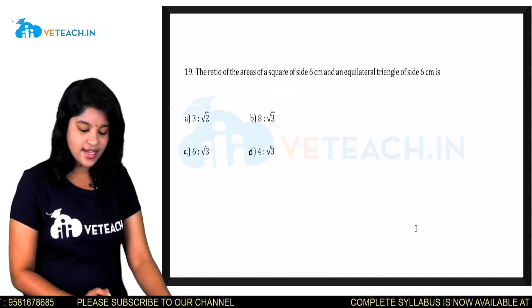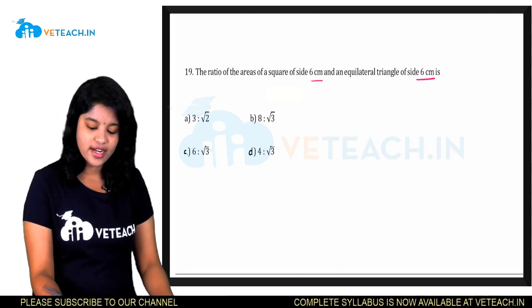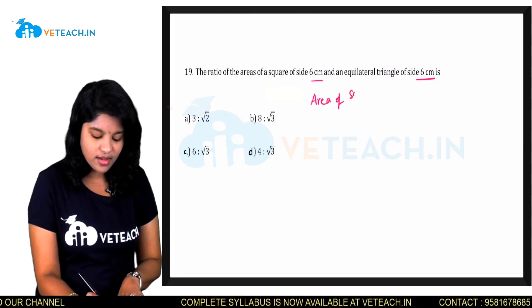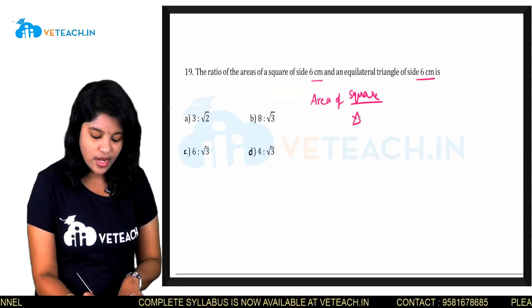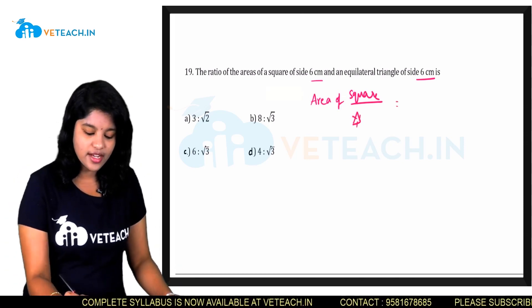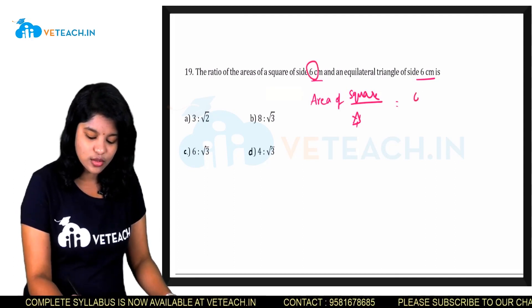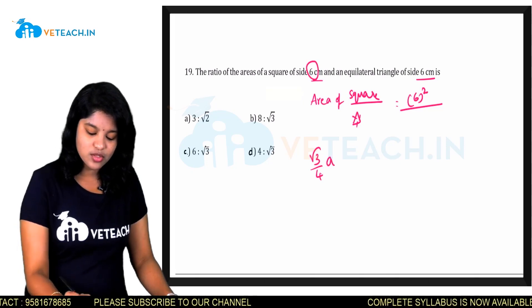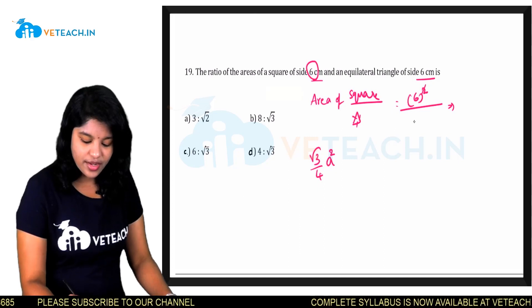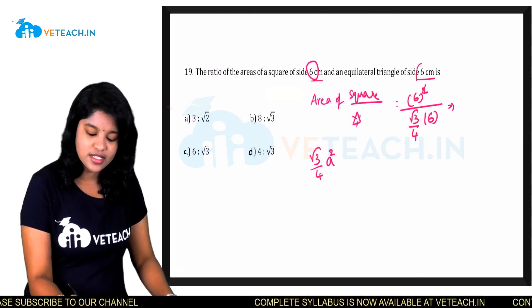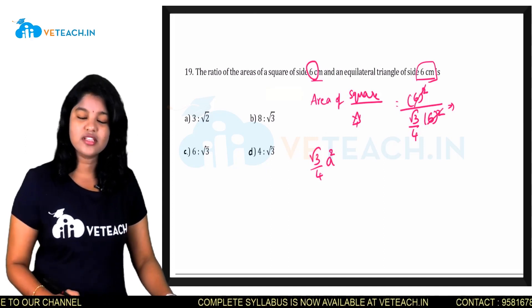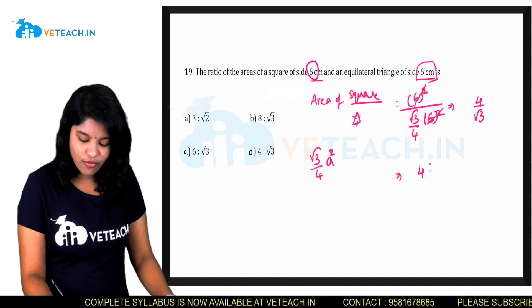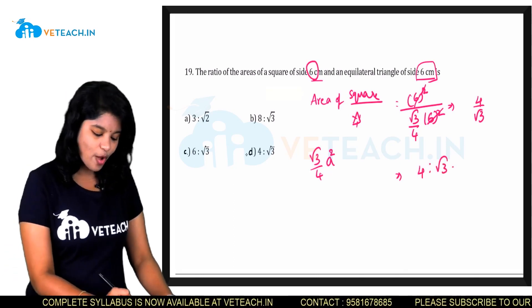The ratio of areas of a square of side 6 cm and an equilateral triangle of side 6 cm is — area of square = A² = 6² = 36. Area of equilateral triangle = (√3/4)·A² = (√3/4)·36. Ratio = 36 / (√3/4 × 36) = 4/√3. The ratio is 4:√3. Option D is our correct answer.